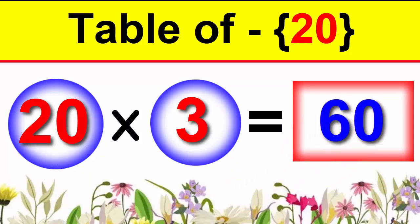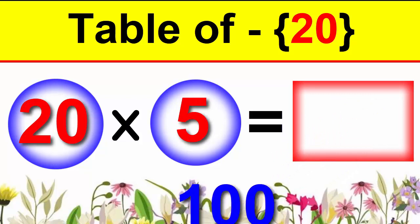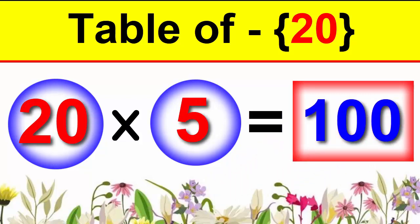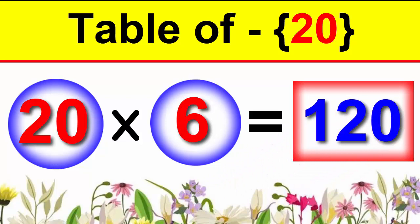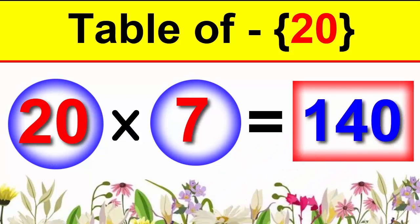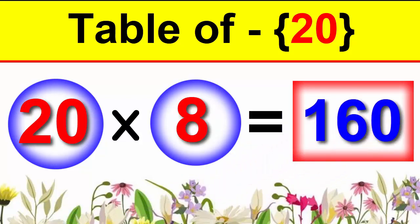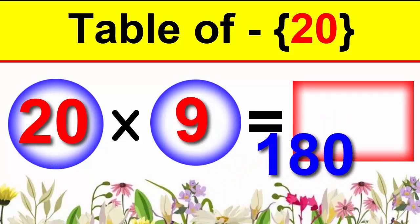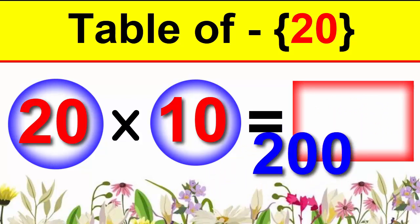20×3 is 60, 20×4 is 80, 20×5 is 100, 20×6 is 120, 20×7 is 140, 20×8 is 160, 20×9 is 180, 20×10 is 200.